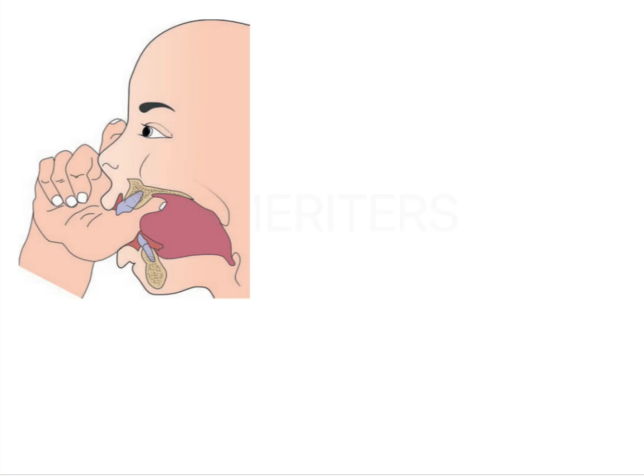First and foremost, in order to place the thumb or any digit within the oral cavity, the mouth has to remain open. So the mandible has to move in a downward and backward direction. This is going to increase the retrognathia of the mandible, increasing Class 2 tendencies, because the mandible will appear more retrognathic as it is more backwardly placed.